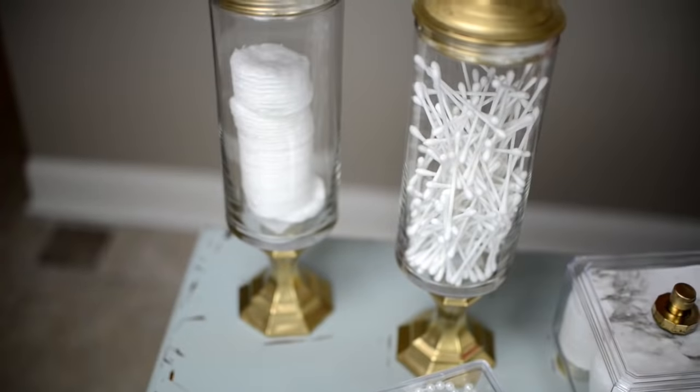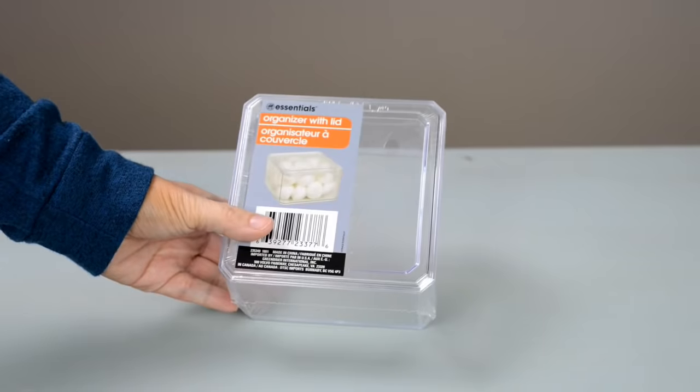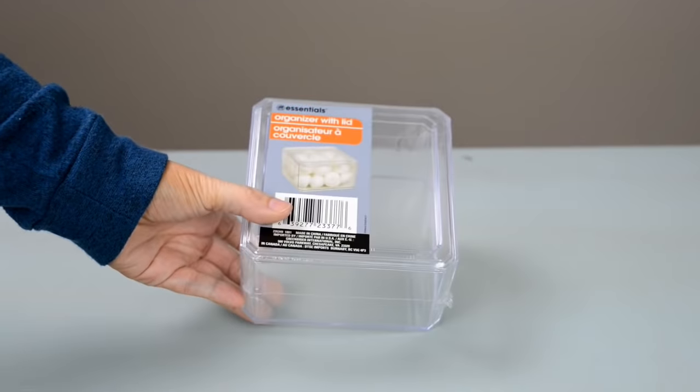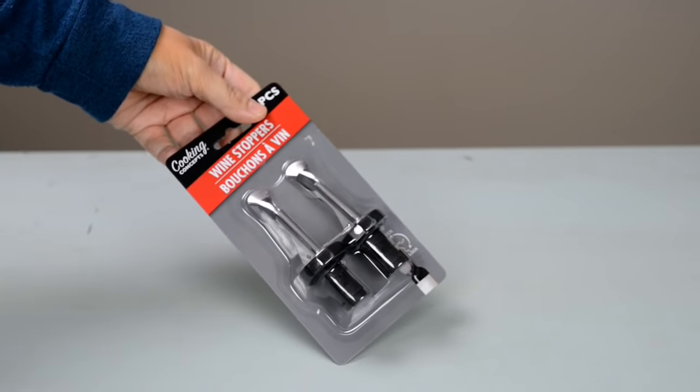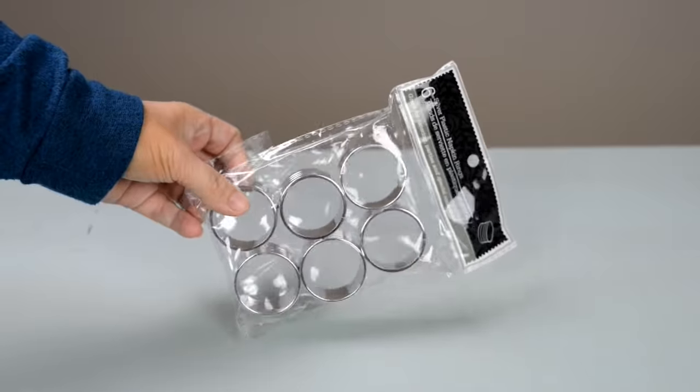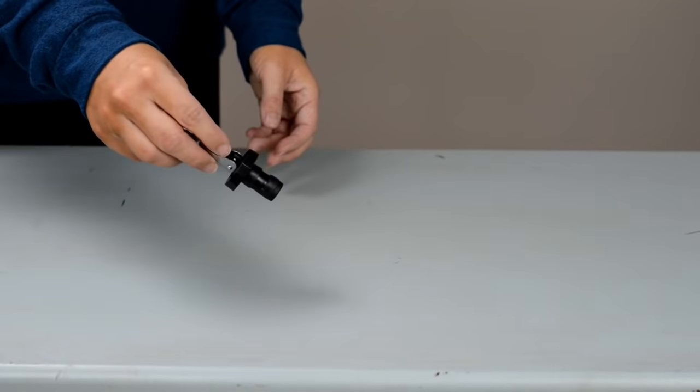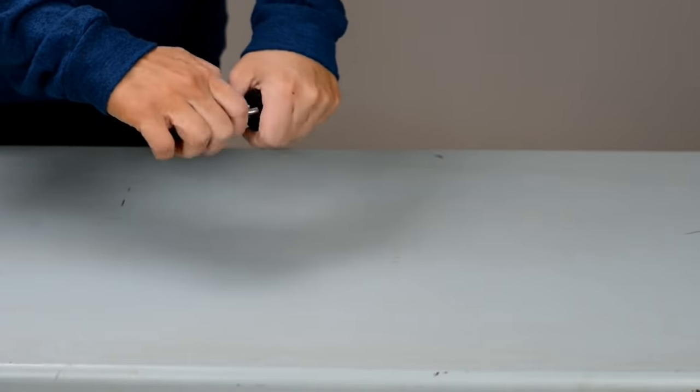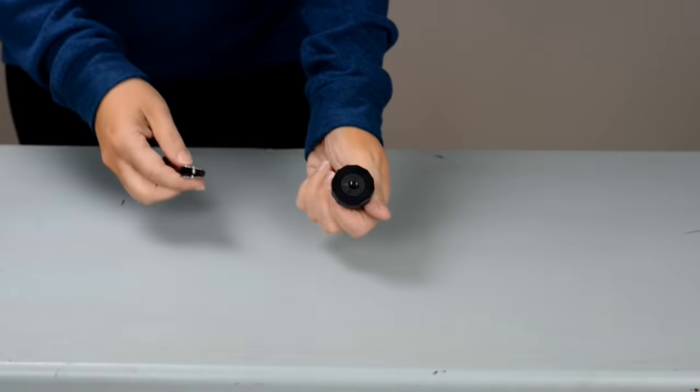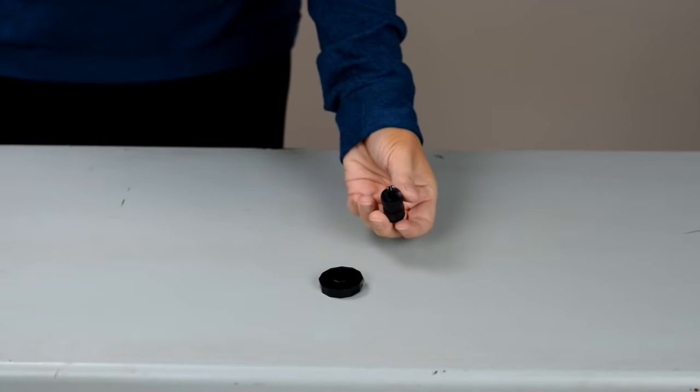The next thing we're going to make is a little container for cotton pads or makeup. You're going to need this glass container, wine stoppers, and these napkin rings that come in a set of six. With the wine stopper, this is going to be our topper, so I'm pulling off the metal piece and cutting off a little bit at the bottom of the rubber piece because it sits up a little bit tall.